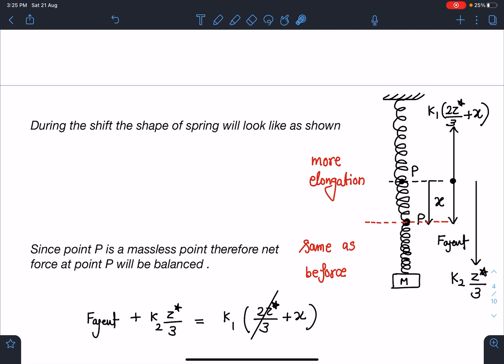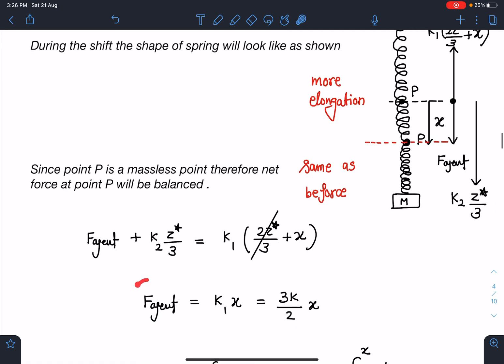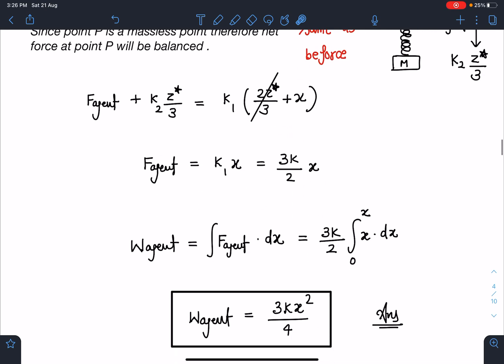The agent force is downward, k₂z*/3 is down, and k₁(2z*/3 + x) is in upward direction. Since forces are balanced, I can write F_agent = k₁x = 3kx/2. Work done by agent is 3k/2 ∫x dx, which when I simplify gives W_agent = 3kx²/4. This is the answer for the first part. Now the second part is actually the challenging part.